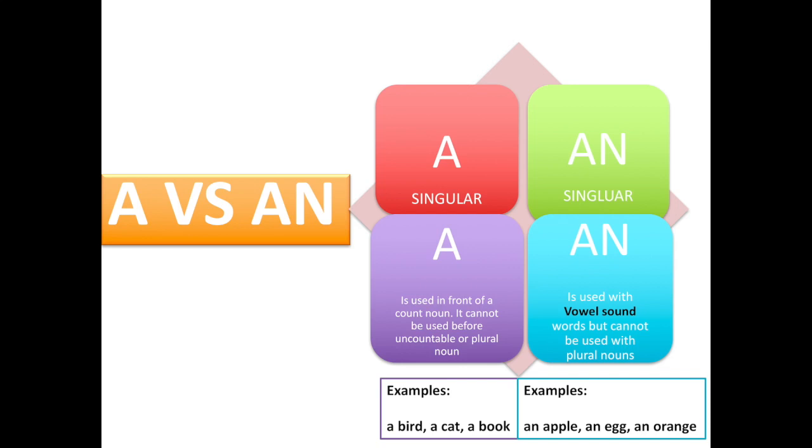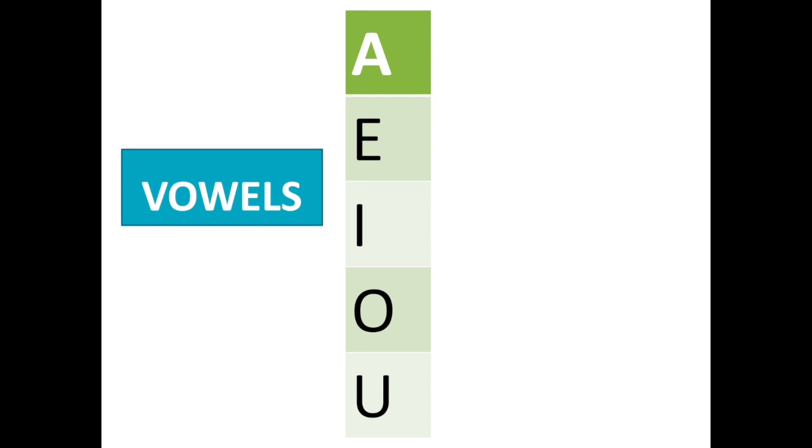Now in case you might forget what vowels are, let's review them real quick. We have vowels: A, E, I, O, and U. There are five vowels in the English language.